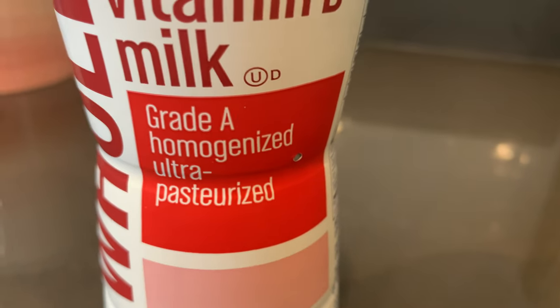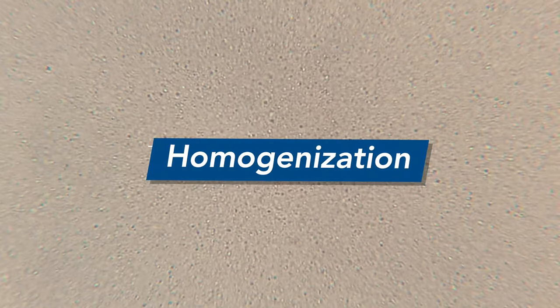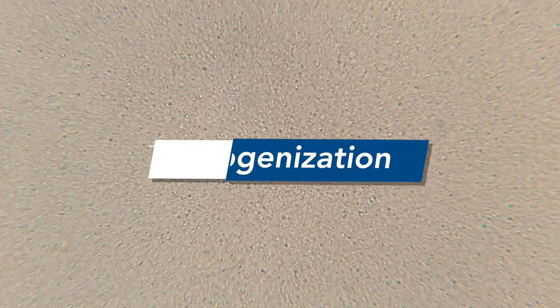Now, you may have seen the words homogenized or pasteurized on milk before. Let's talk about these two words. Homogenization is a process where the milk is emulsified, or mixed up, so that the fat globules are really small. This helps keep the milk from separating and it gives it a consistent flavor, and it also helps it last longer on the shelves.